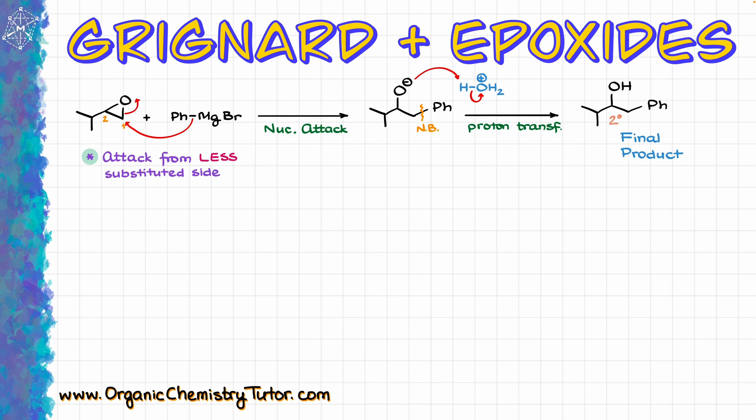Simple enough, right? Well let's look at another example. So in this example again I have an epoxide on the left side and I have my vinyl magnesium bromide, so that is going to be my Grignard reagent.